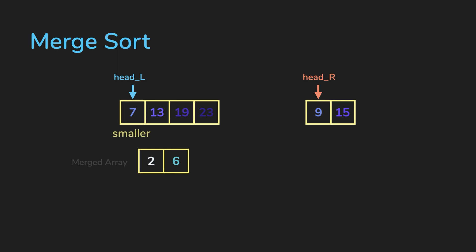This time, L is smaller than R, so we insert 7 into our merged array and increment the head pointer of L. So we repeat this until we fully merge the two arrays.